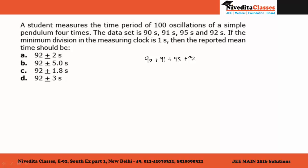First, we have to calculate the mean value. Our mean value will be the sum of all the observations divided by the number of observations. When we calculate this, we get 92 seconds. So our first part is done; we have found the mean value.